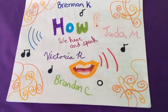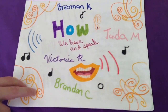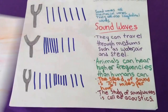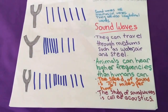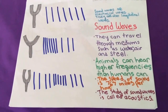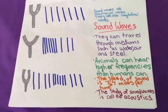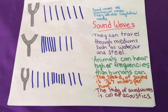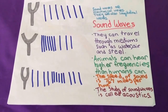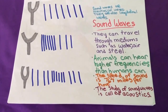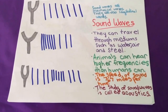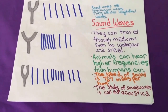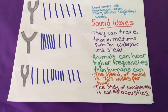How we hear and speak. Sound waves can travel through mediums such as water, air, and steel. Animals can hear higher frequencies than humans, and the speed of sound is 767 miles per hour.